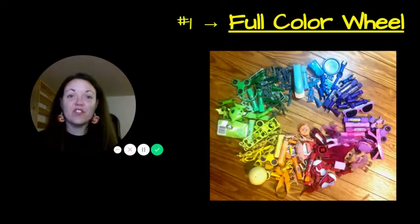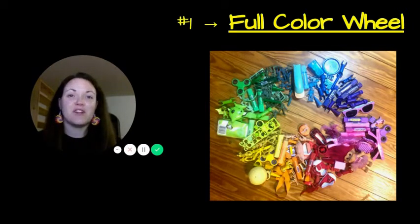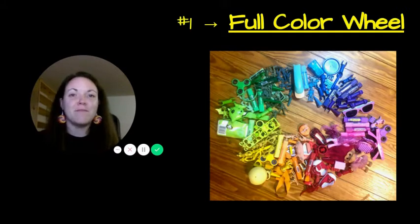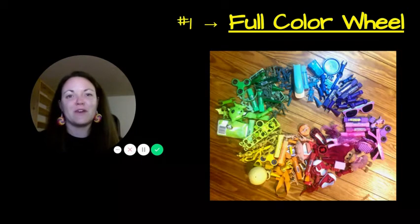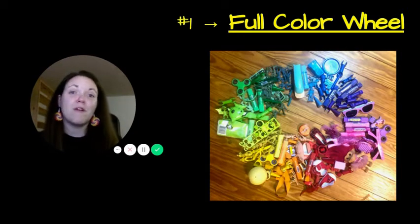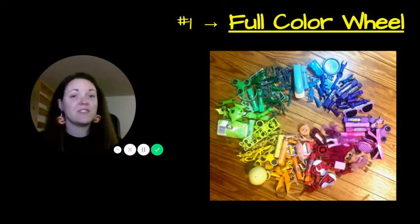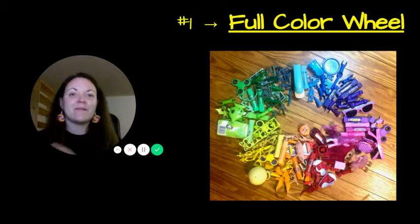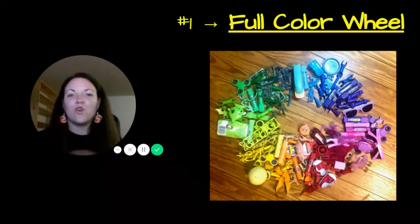The first found object collage we're going to create is the full color wheel. As you can see in the picture, I've gone through my kid's toy drawer and found as many colorful things as I possibly could — some random crowns, some Legos, some other blocks, and just toys. Really anything goes: something from the kitchen, your clothes, some art supplies — whatever you have, make it work.